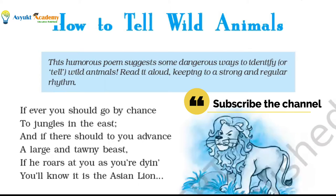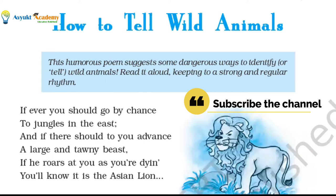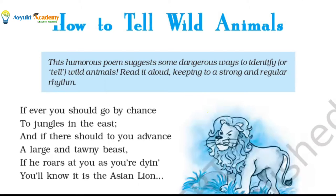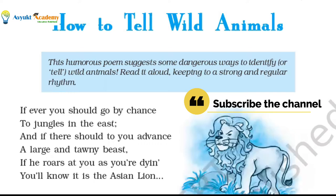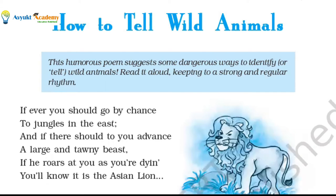The poetess suggests some dangerous ways of identifying wild animals, and the suggested ways create humor. She says if you ever visit the jungles in the east and happen to encounter a lion, tiger, or leopard, you will be able to identify them by the way they attack you. Identifying an animal while dying — the idea makes you laugh, but by then you identify them, you will be dead.